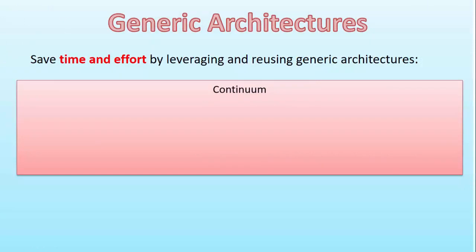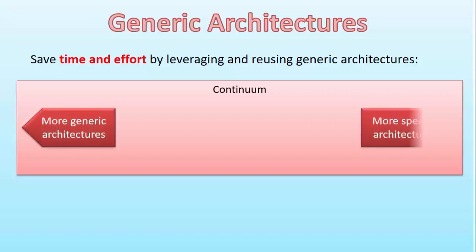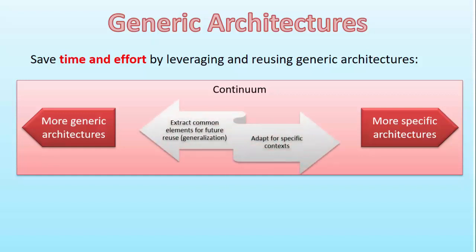We can save a lot of time and effort if we leverage and reuse these generic architectures. You can think of generic architectures as being on a continuum — something that ranges across a broad spectrum. In this case, the range goes from architectures that are more generic to architectures that are more specific. A key thing we can do within that spectrum is extract elements from specific architectures and create them in a format that allows them to be more generic — generalized so that they can apply in multiple situations.